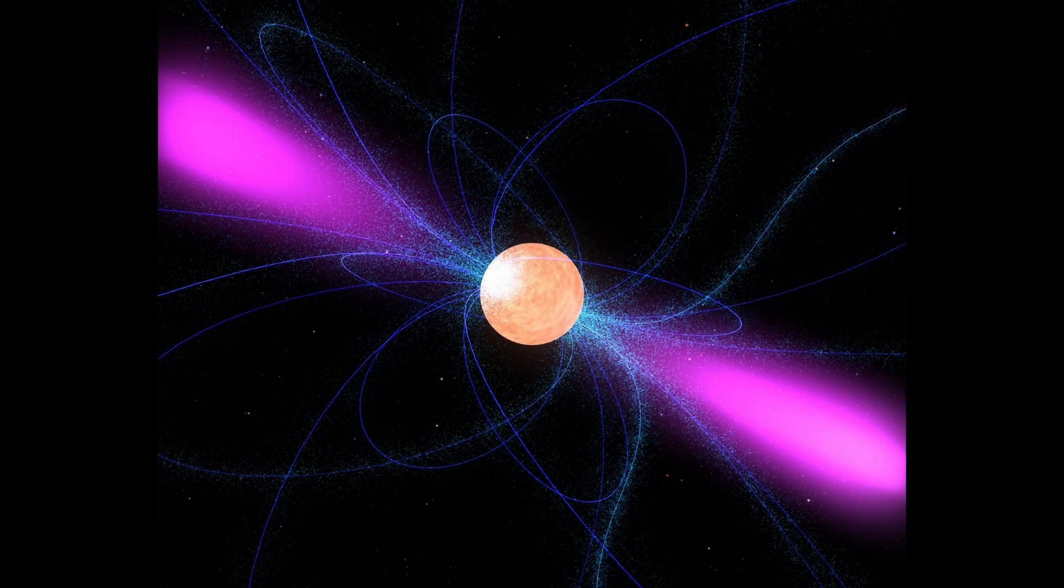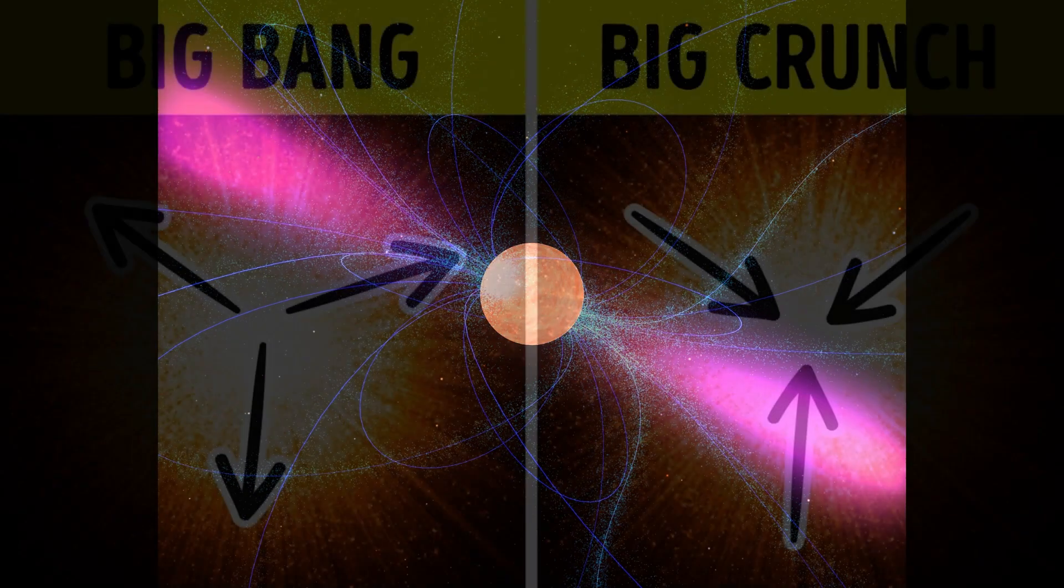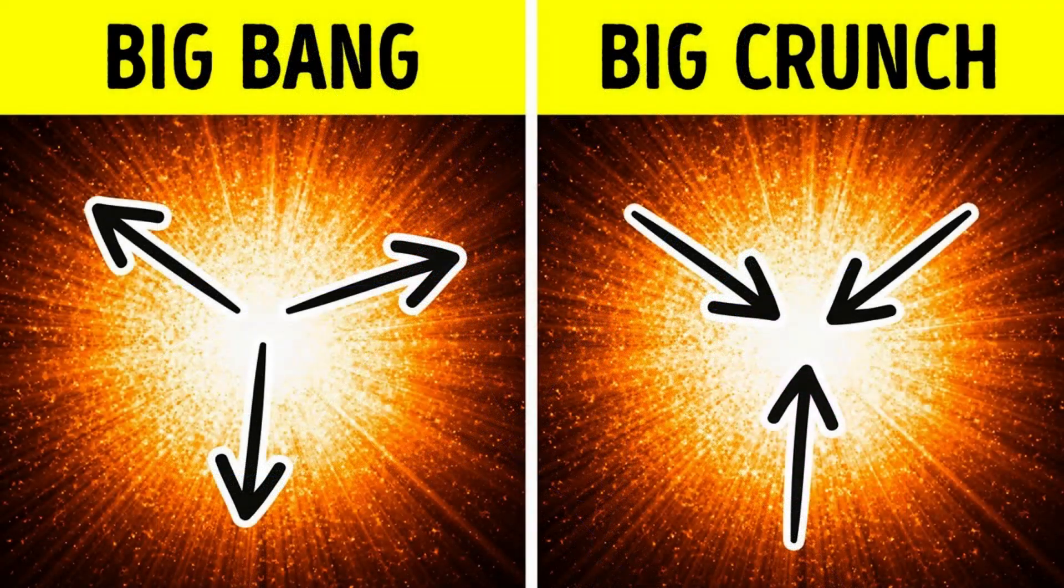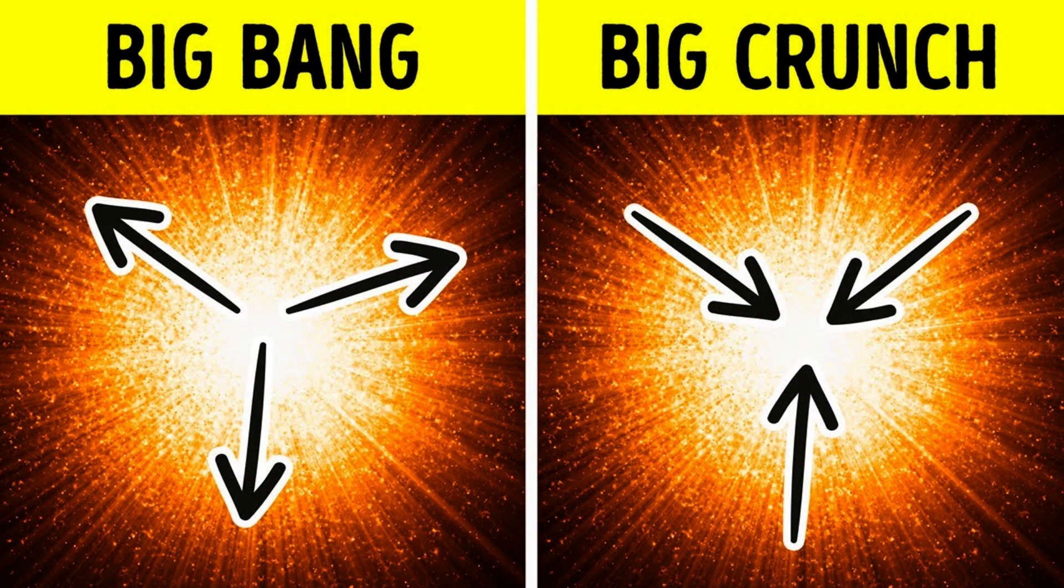The fastest spinning object in the universe is a pulsar, which can rotate up to several hundred times per second. The universe may eventually end in a big crunch, where all matter is compressed into a single point, or a big freeze, where the universe continues to expand until all stars burn out and everything becomes dark and cold.